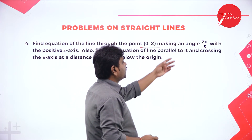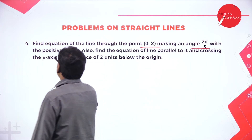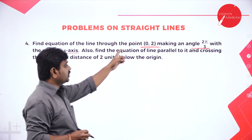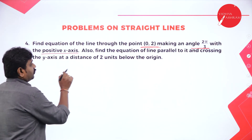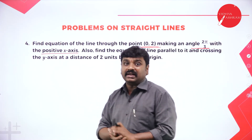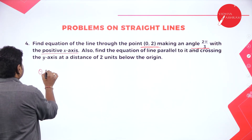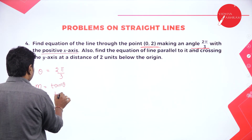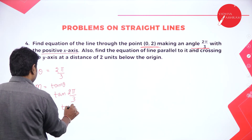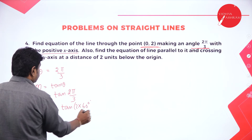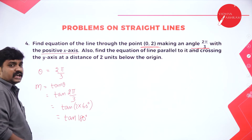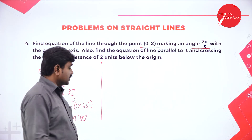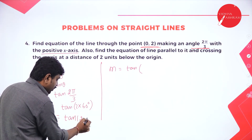Next problem: find the equation of line passing through (0, 2) and making an angle 2π/3 with the positive x-axis. Also find a line parallel to it. The point is (0, 2), called x1, y1. They gave angle theta equals 2π/3, not slope directly. Slope M equals tan theta equals tan(2π/3).